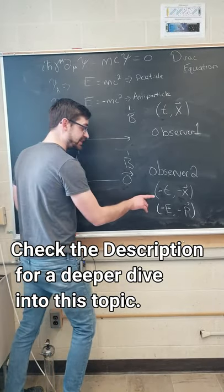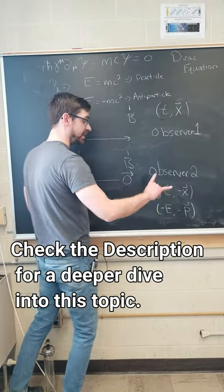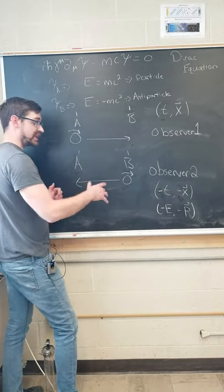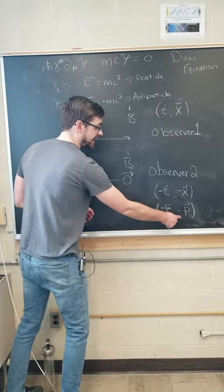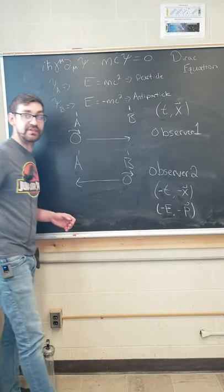How do we describe this? Well if we take the time component and the spatial components and invert them, we actually can recover a positive energy. The four momentum for those components are negative e and negative p, and this is where that negative e comes from.